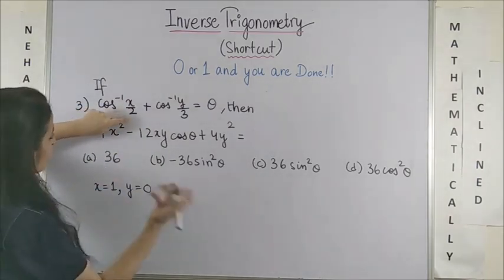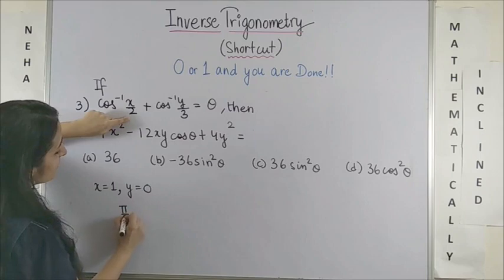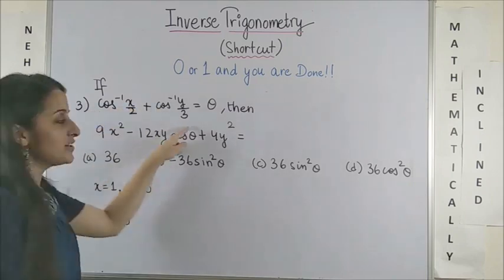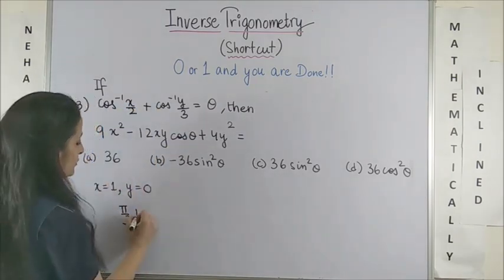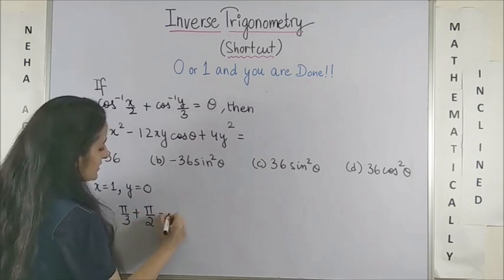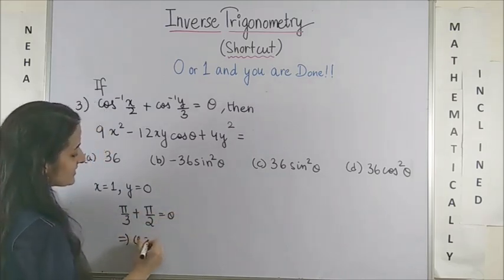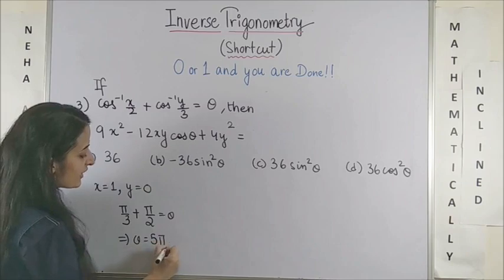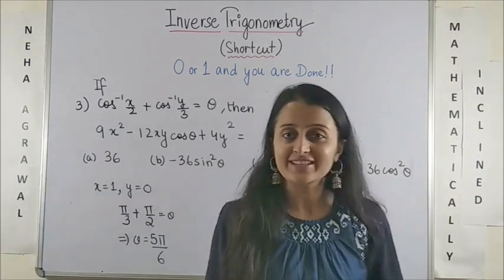What happens? You get cos inverse of half which is of course your pi by 3 plus cos inverse of 0 which is pi by 2 which is theta. So on taking the LCM, we ended up getting 5 pi by 6 which is also 150 degrees.